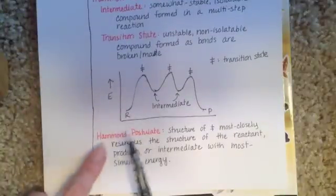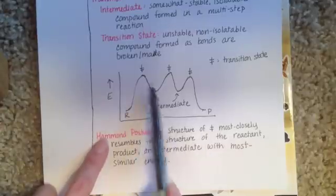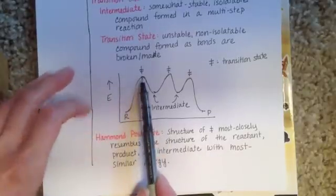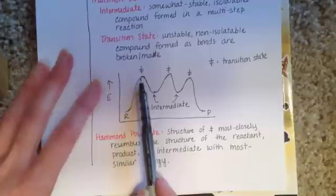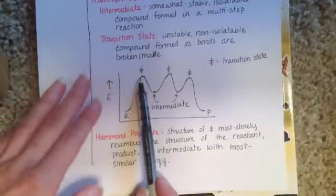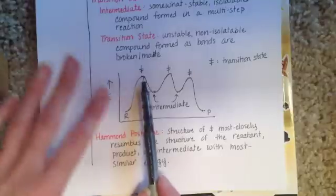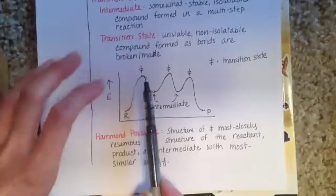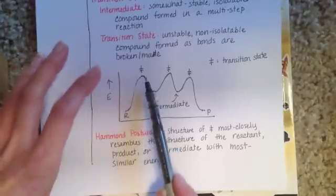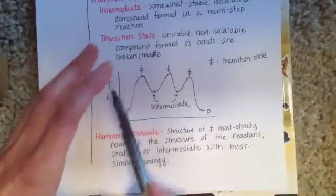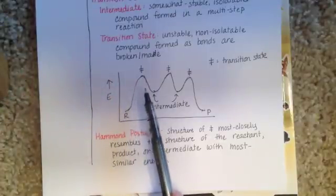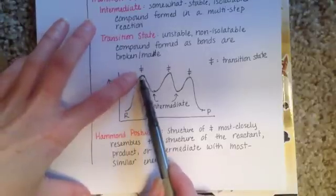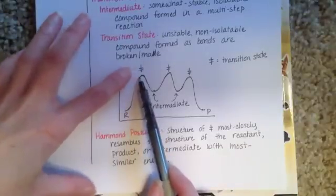What the Hammond postulate means is that because the transition state is an unstable compound with bonds in the process of being broken or formed, or maybe a combination of the two, it's not a stable molecule. The transition state is very fast — we sometimes say it's fleeting — it only exists for fractions of a second.